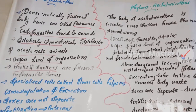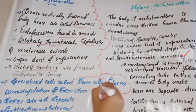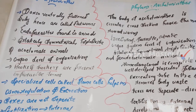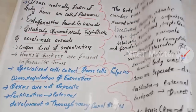In parasitic forms, hooks and suckers are present. Specialized cells called flame cells help in osmoregulation and excretion. Osmoregulation means maintaining the salt-water concentration balance within the body.